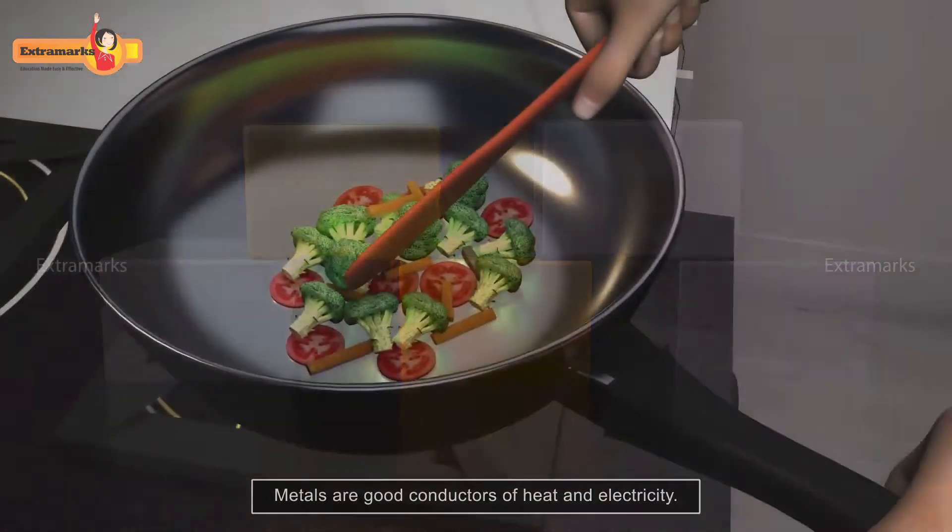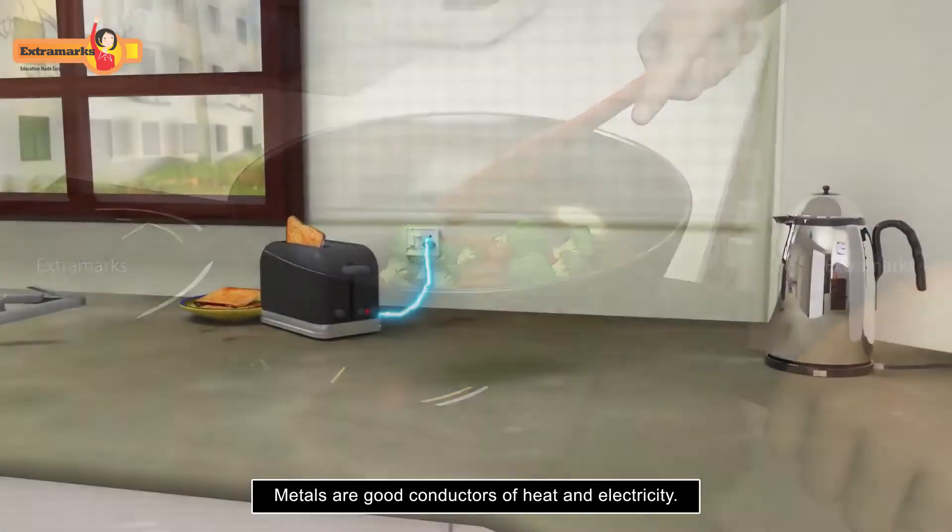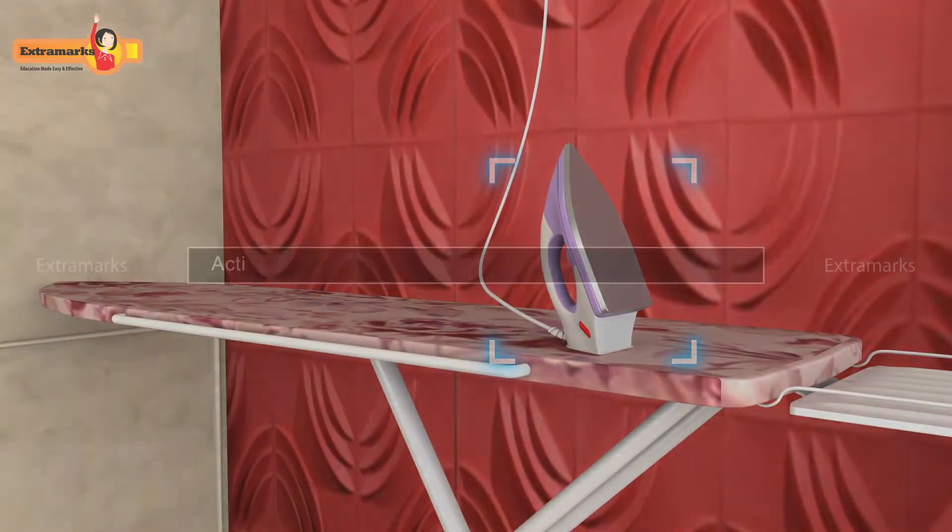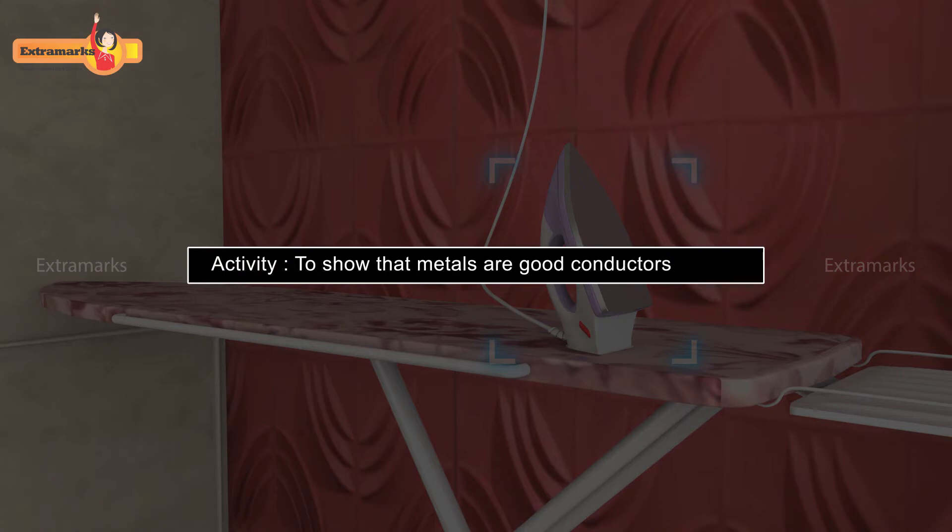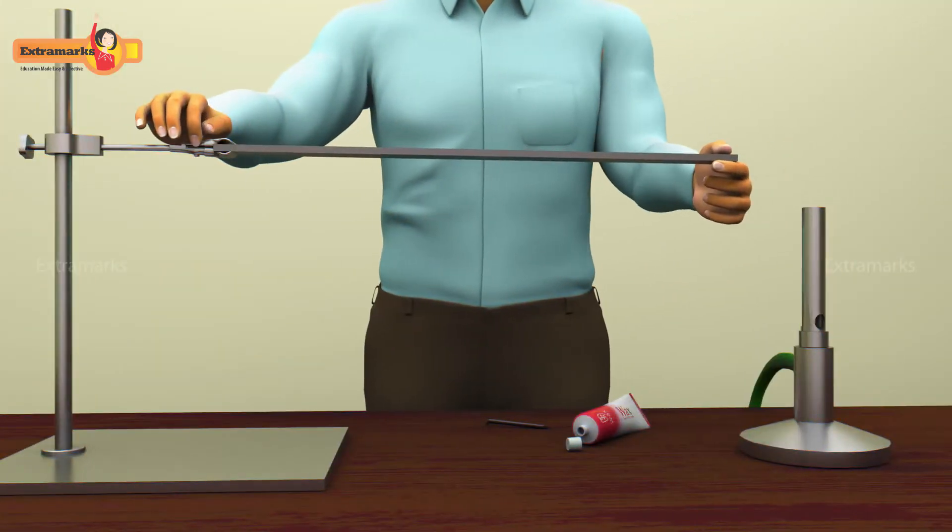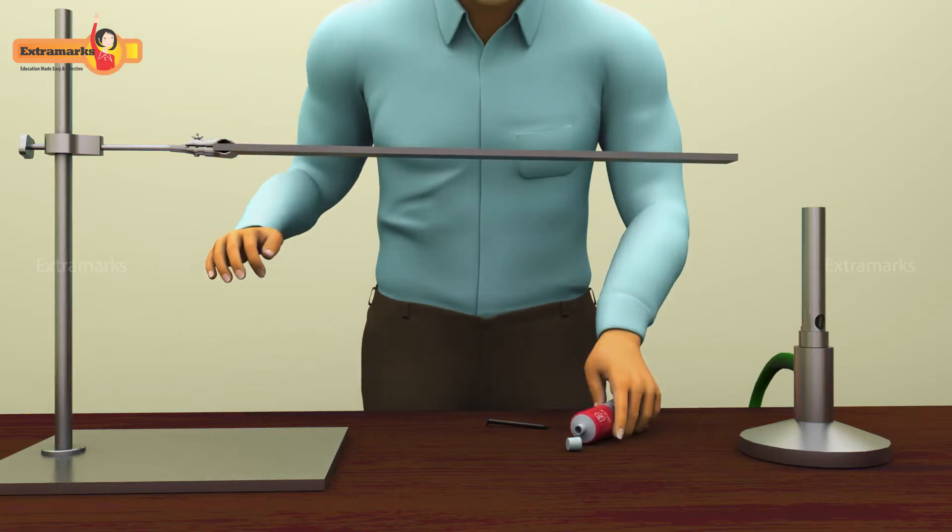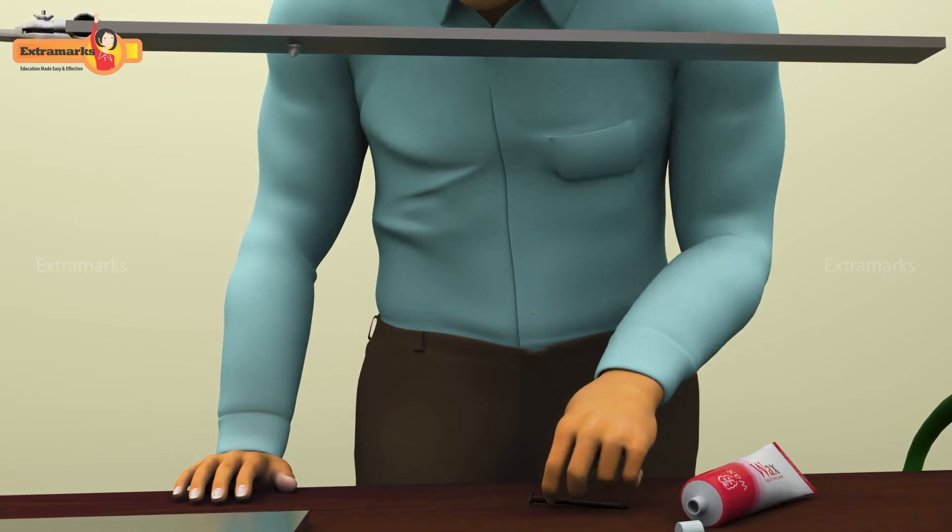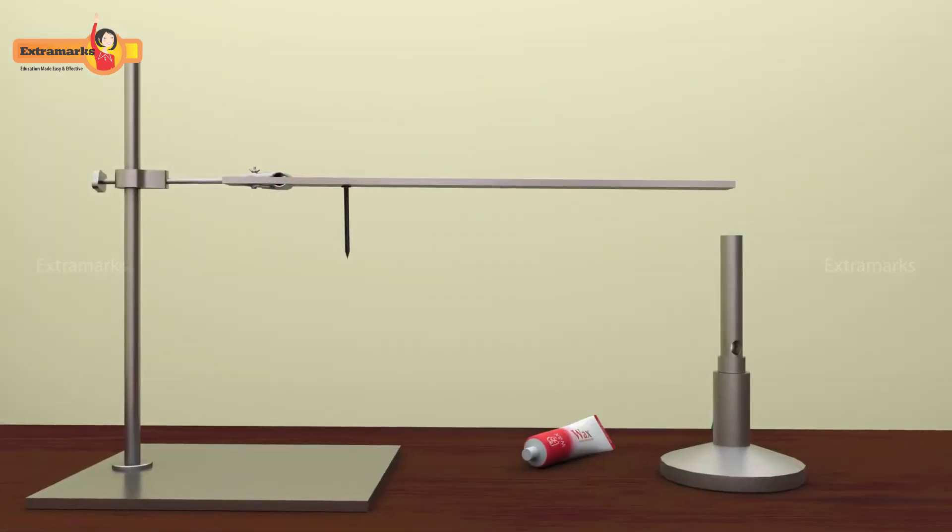Metals are good conductors of heat and electricity. Therefore, they are used for making cooking utensils and electrical gadgets. Let us perform an activity to show that metals are good conductors of heat. Take an iron rod and fix an iron nail at one end with the help of wax.